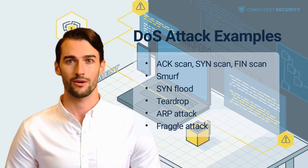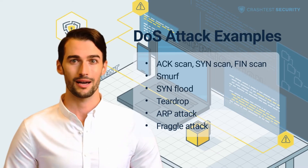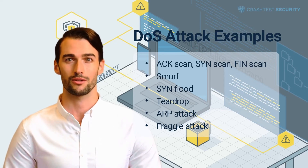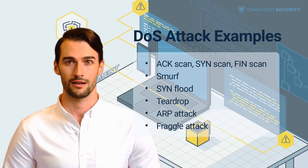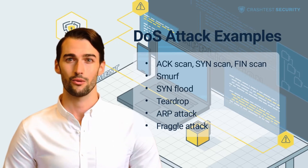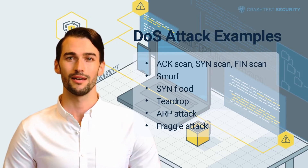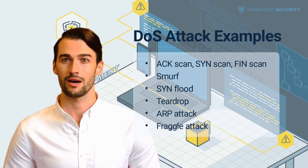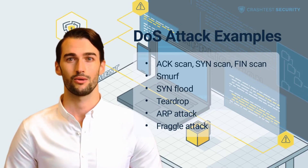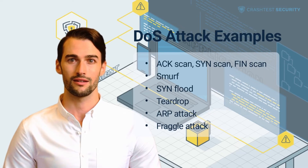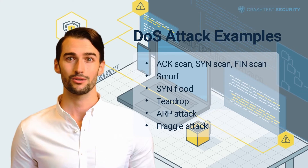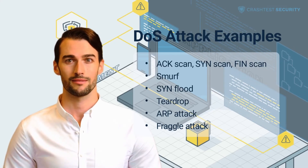An SYN flood, also known as a half-open attack, is a technique that exploits the transmission control protocol. During a SYN flood, an attacker repeatedly sends connection requests to all ports on a server. Typically, a server then responds with synchronization acknowledged packets from every port that is currently open. If a port is closed, it will respond with a reset packet. Usually a client responds to the SYN-ACK packet with an acknowledged packet during the handshake. However, during an SYN flood, attackers use fake IP addresses to send the initial SYN packets. As a result, the server never gets a response to its SYN-ACK packets, and its ports remain open and it cannot reset them.